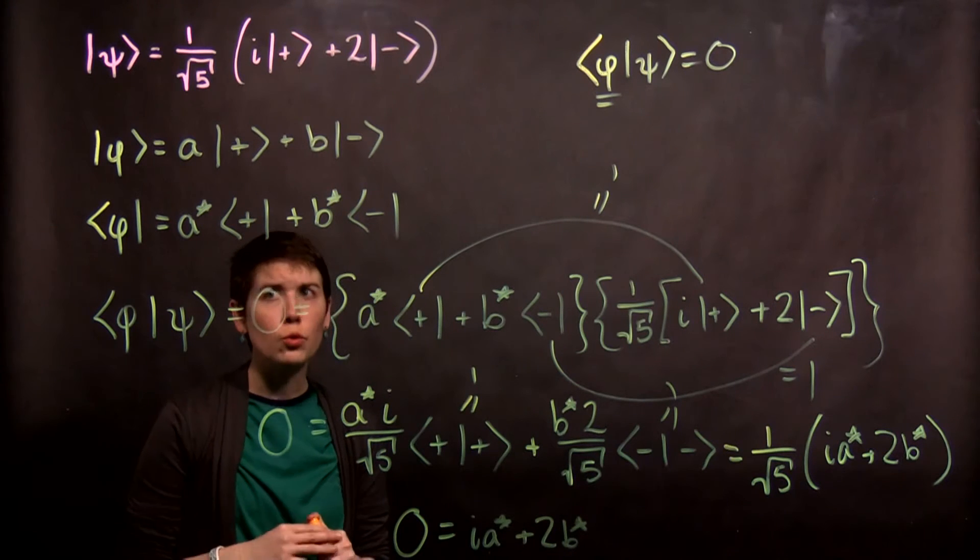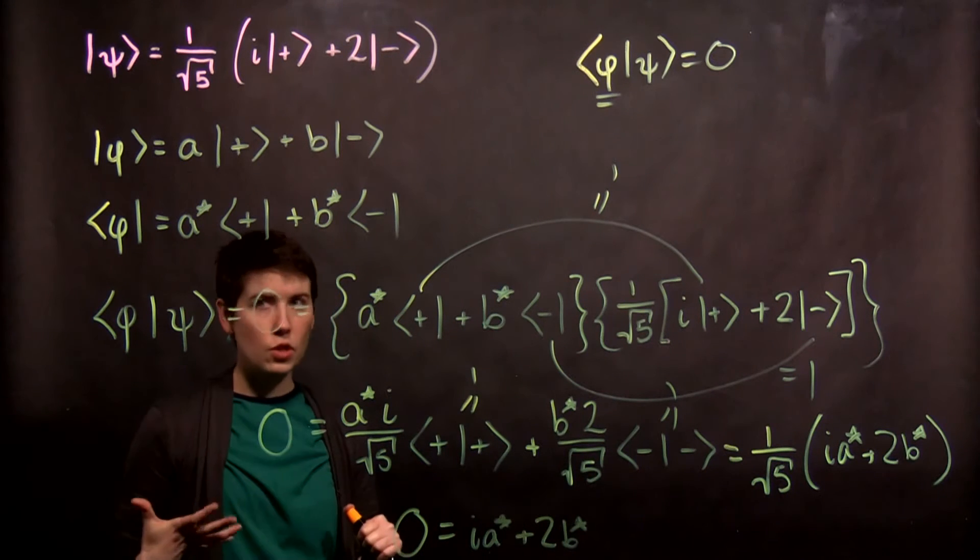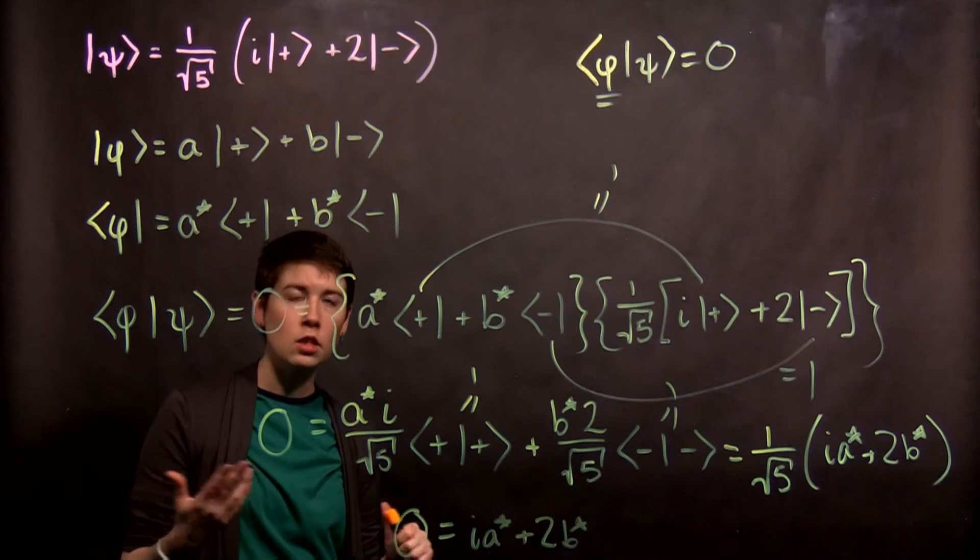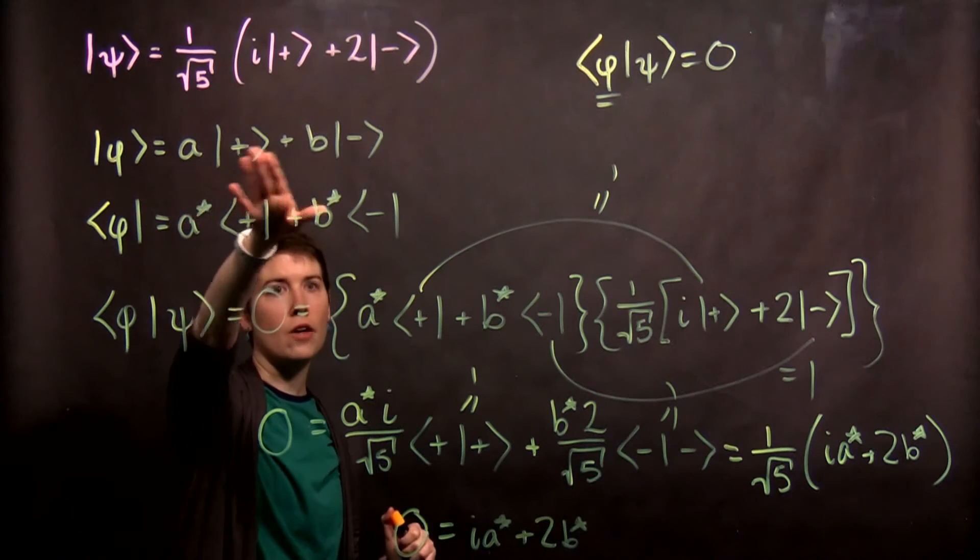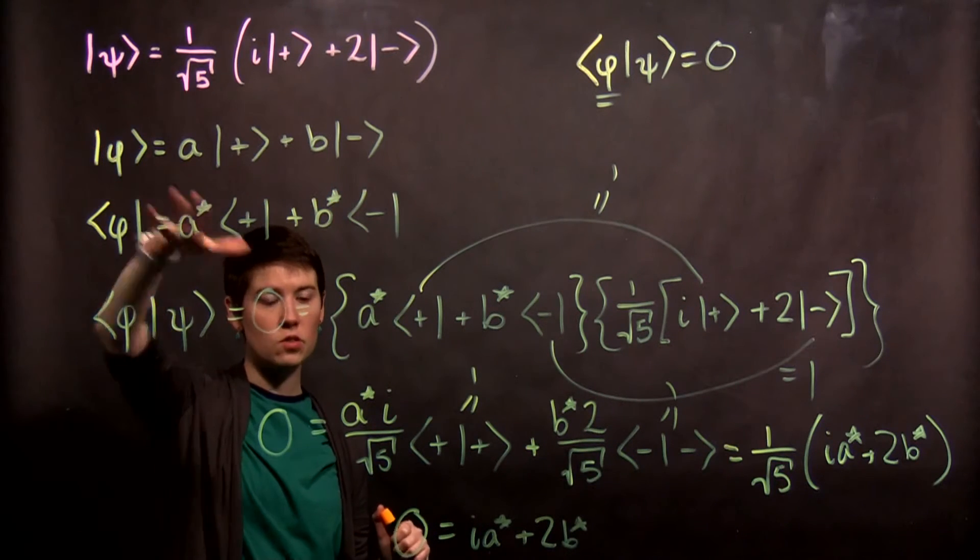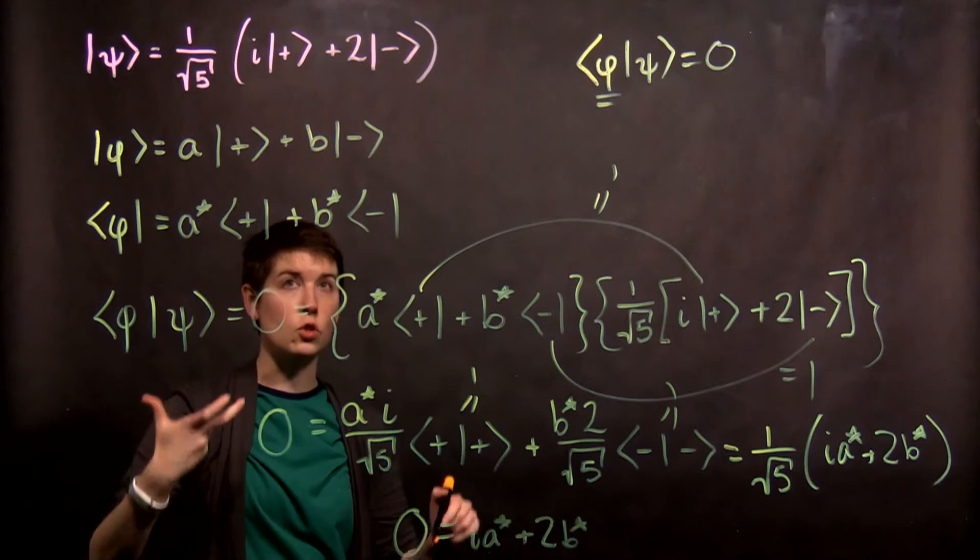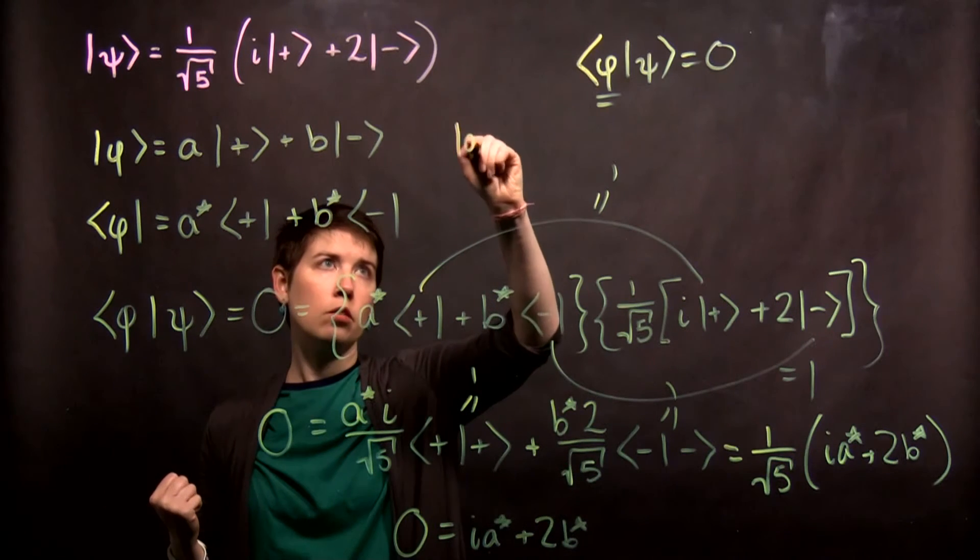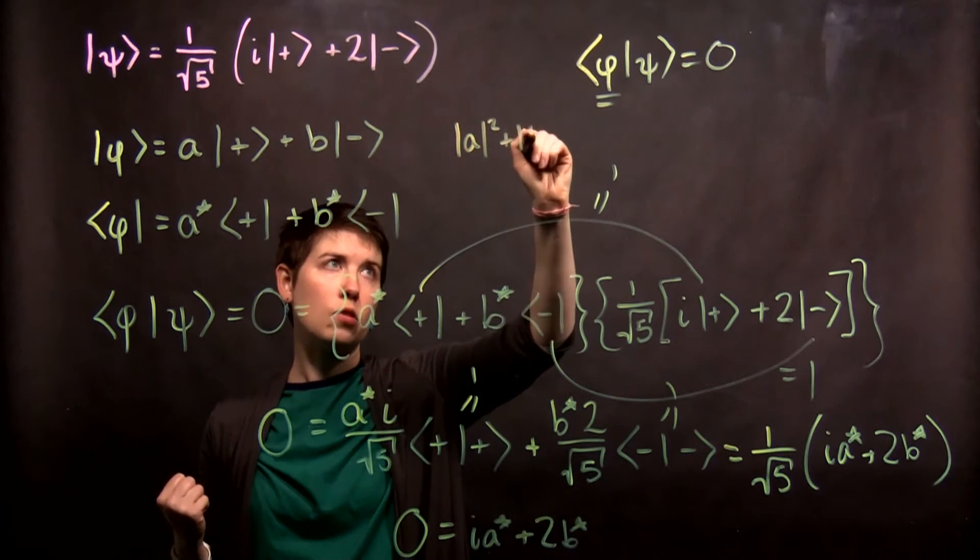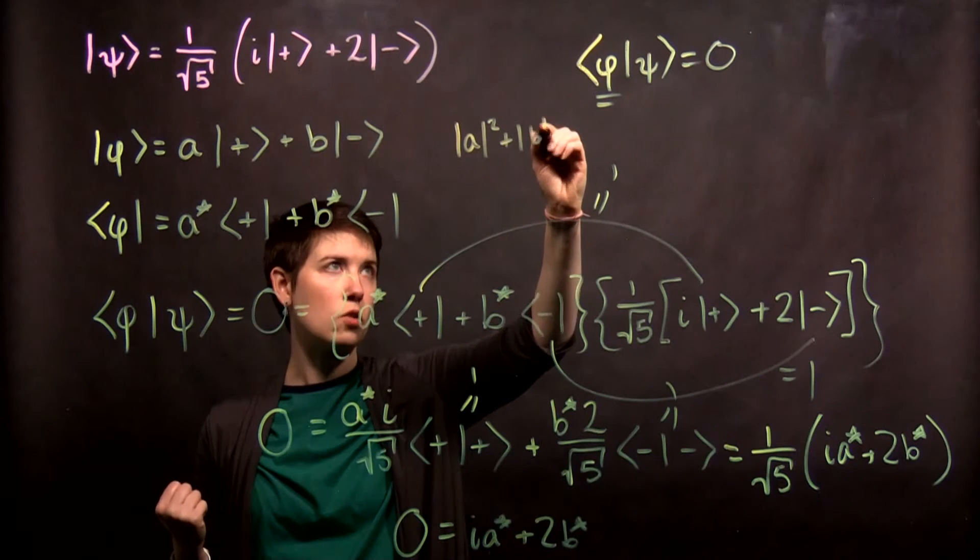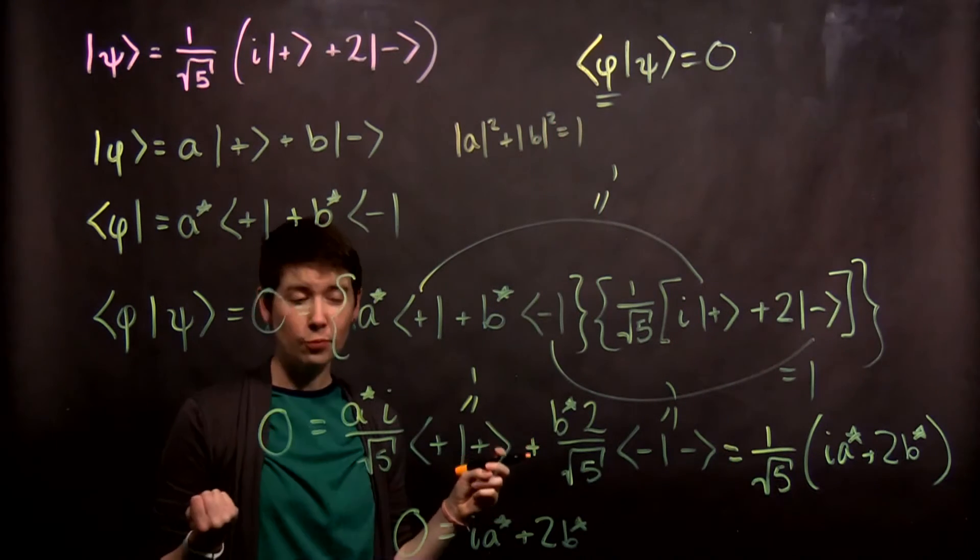Now, what we could do is choose a star to be real, and we can either say that these are going to be normalized, in which case we have a constraint that magnitude of a squared plus magnitude of b squared equals 1.